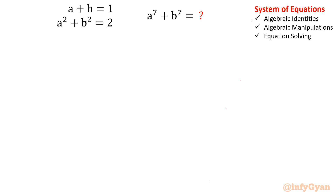Hello everyone, welcome back to InfiGam. Today we have an exciting math problem from a prestigious math olympiad. We will be solving a system of equations and finding the value of a⁷ plus b⁷. We are given two equations: a plus b equals 1, and a² plus b² equals 2. While solving, we will use algebraic identities and algebraic manipulations. So let us get started.